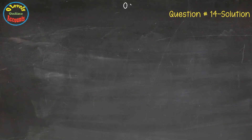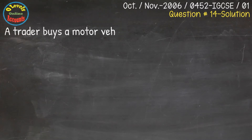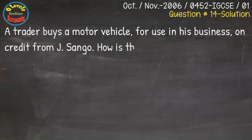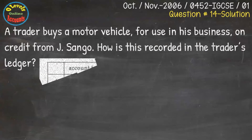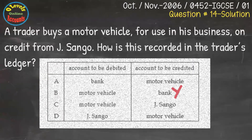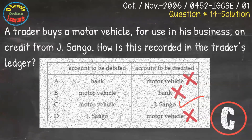We have question number 14 from October/November 2006, 0452 IGCSE Paper 1. In this question, a trader bought a motor vehicle for his business use on credit from Sango. How is this recorded in his ledger? As per double entry: motor vehicle debit and Sango credit. This is the correct answer, available with the C option in the question.